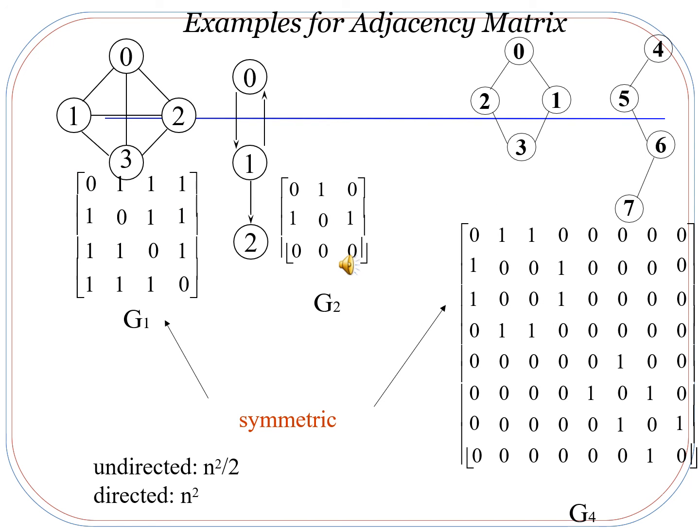Here we are given examples for the adjacency matrix with three graphs: G1, G2, and G4. We have to calculate the adjacency matrix for each. If there is a direct edge between two nodes, that entry is 1; otherwise it is 0. For example, in graph G1 there are four vertices, so the adjacency matrix is of size 4×4. Node 0 is directly connected to nodes 1, 2, and 3, so there are three 1s in the 0th row. Similarly, node 1 is connected to 0, 2, and 3, giving three 1s in the first row. We construct the adjacency matrix for the given graphs in the same way.